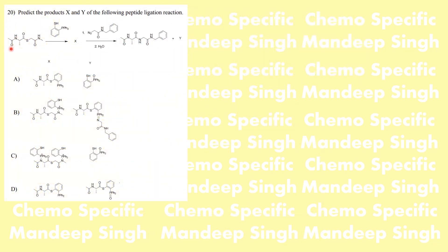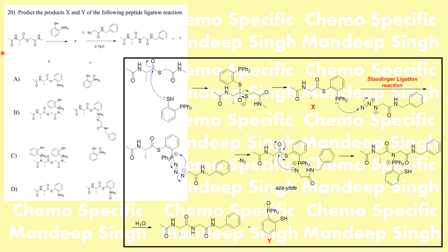The next problem is based on the peptide ligation reaction. We are given a thioester treated with a reagent to give compound X, followed by treatment with an alkyl azide to give peptide bond formation. This reaction sequence is based on the well-known Staudinger ligation. In the first step, the thioester is attacked by a thiol — a phenyl thiol — to give an intermediate. The negative charge on oxygen returns and the leaving group departs to give compound X. Out of the options, either D or A should be correct.